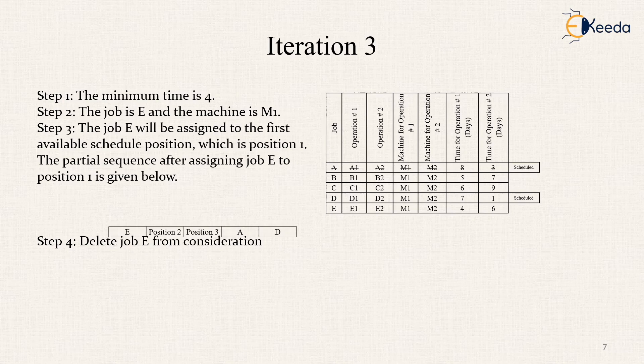Next, the minimum time is 4 which is E and the machine is M1. So, we go with job E which is assigned and finally we find the partial sequence after assigning the job E to position 1 which is given below.